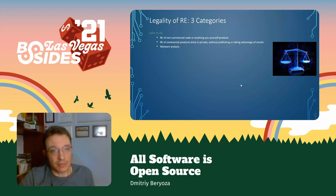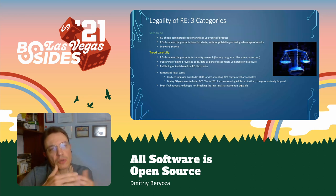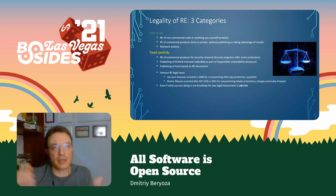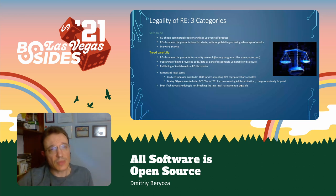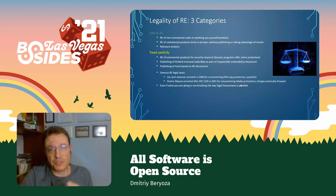Malware authors will not go after you if you reverse their malicious code. The second category is where you have to go more carefully. If you're doing reverse engineering of commercial products for security research, there are gray areas. Bounty programs do offer some protection with explicit clauses allowing a certain degree of reverse engineering. You have to be careful when you publish portions of reversed code as part of responsible disclosure, or publish tools built on that knowledge — there were legal cases in the past where charges were eventually dropped, but that doesn't mean it happens every time.